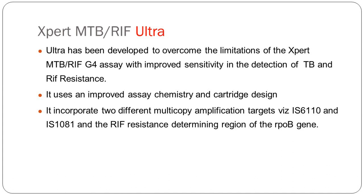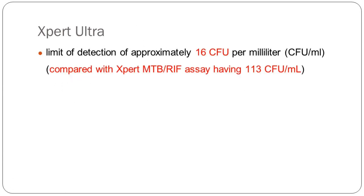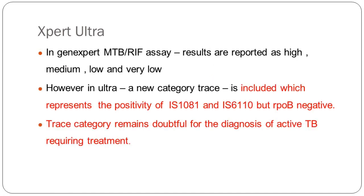You have a new system — GeneXpert Ultra compared to the plain GeneXpert. The difference is it incorporates multi-copy amplification with two additional targets apart from the rpoB gene — IS1081 and IS6110. The number of bacilli required to pick up a positive report is much less. WHO recommends Ultra as the new test now. GeneXpert Ultra has been recommended for extra-pulmonary TB like CSF and fluid samples where you have a less bacillary load. Ultra gives reports as high, medium, low, very low — but there is a category known as trace.